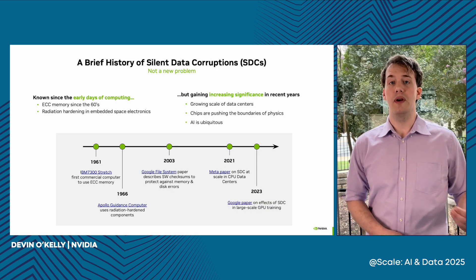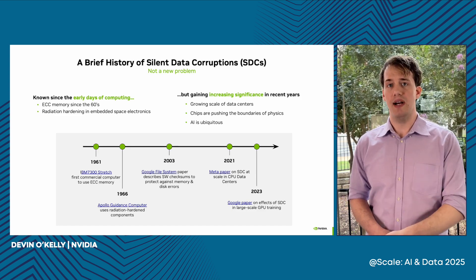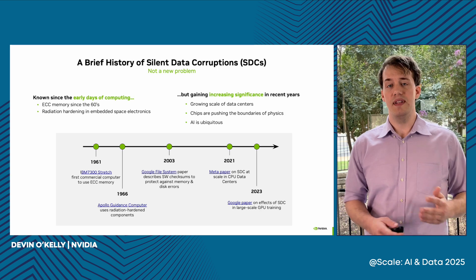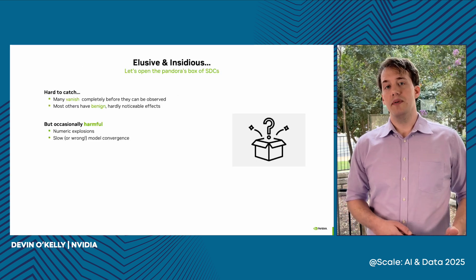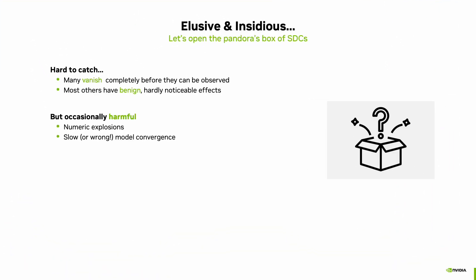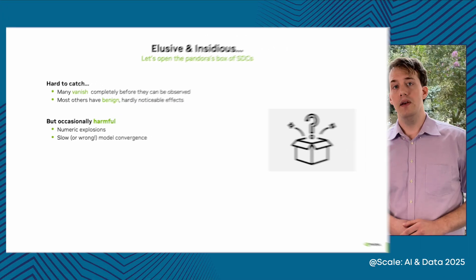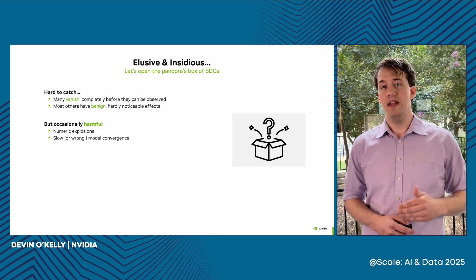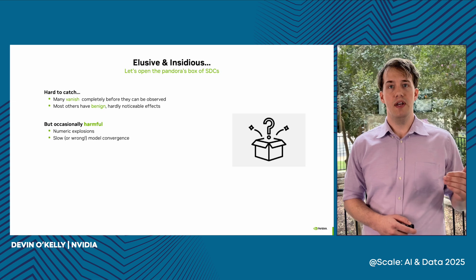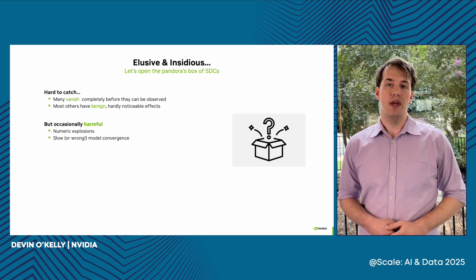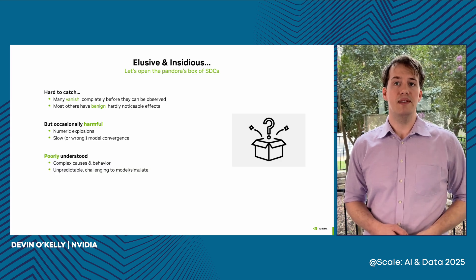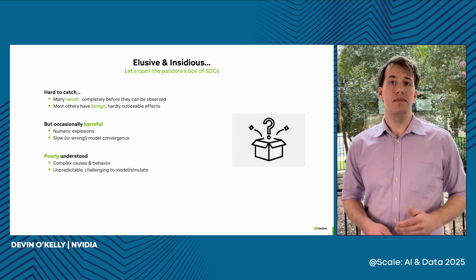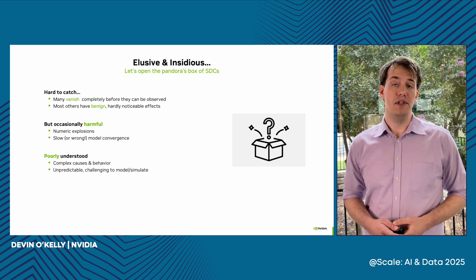As GPUs and compute become more ubiquitous in our day-to-day lives, showing up in our cars, our interactions with chatbots, and recommendation systems, the possible consequences of SDCs become much more diverse. What makes them particularly difficult to wrangle with is that they're relatively rare and pretty hard to catch. The majority of these errors have very little effect on final calculation results and therefore cannot really be observed. These harmless errors make it very challenging to note the true spread of SDCs throughout our ecosystem. A small fraction of SDCs fall through the cracks, and some analyses suggest that fewer than 1% of SDCs actually cause catastrophic numerical explosions.